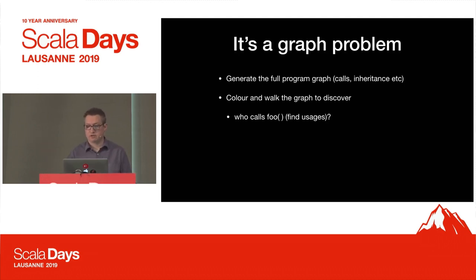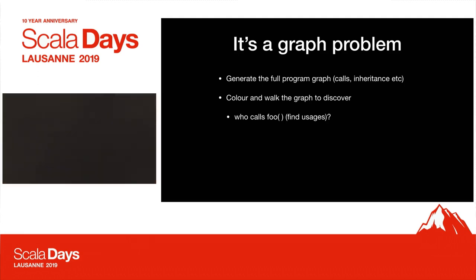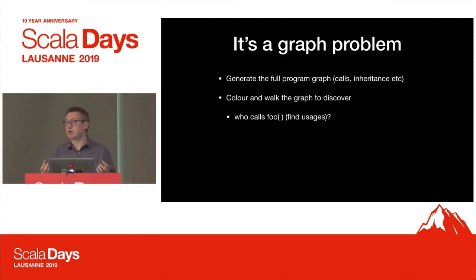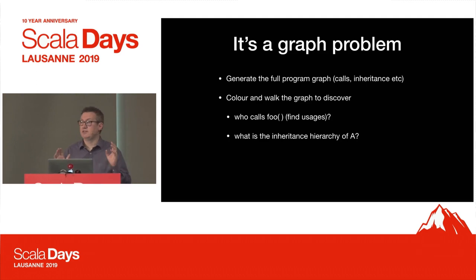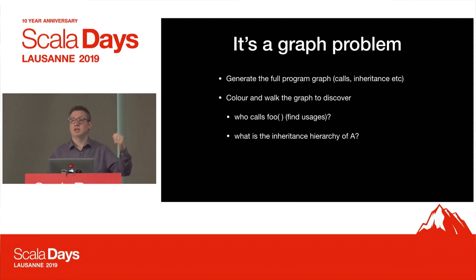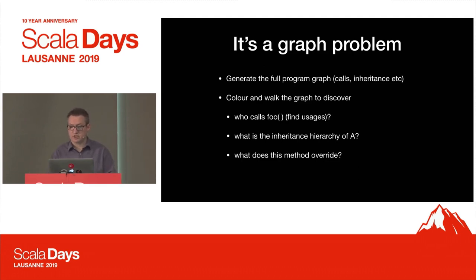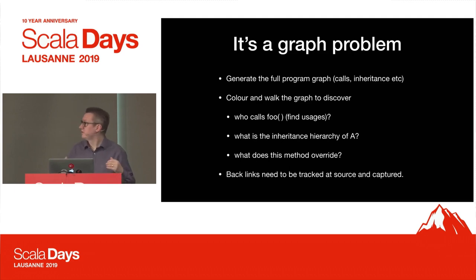The simple case is find uses. Because now from foo, I've got a bi-directional graph - I know who calls it and what it calls. The dependency hierarchy is easy. I've looked at the forward references and found all the places in the code that talk about class A, so I now have the list. Or what does this method override? You know, what's the hierarchy? But you need to trace it back from the source and generate this information.